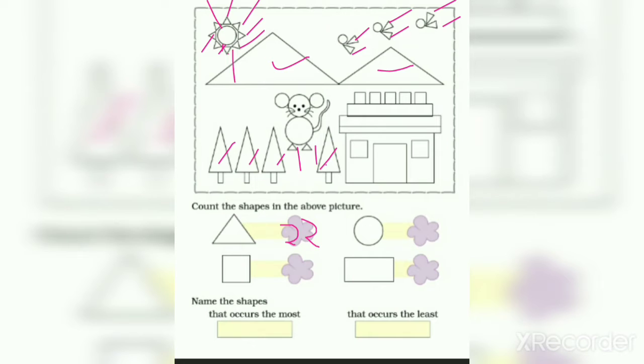Now count squares. 1, 2, 3, 4, 5, 6, 7. We have 7 squares.